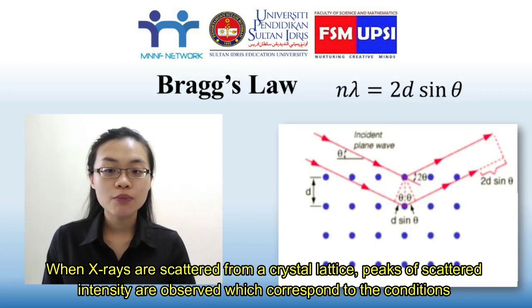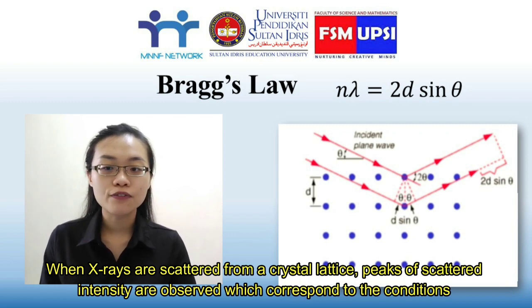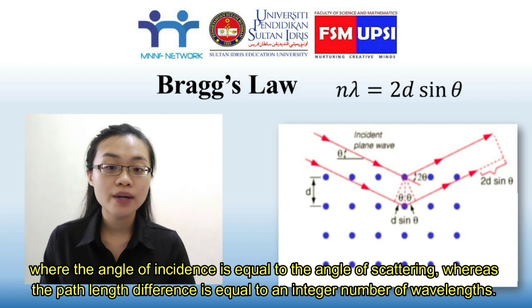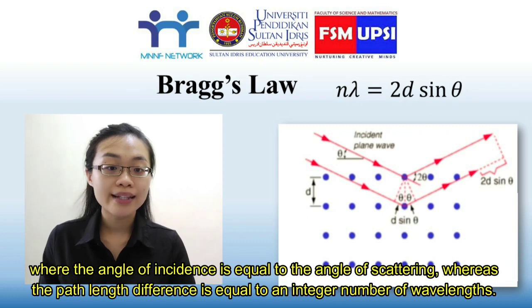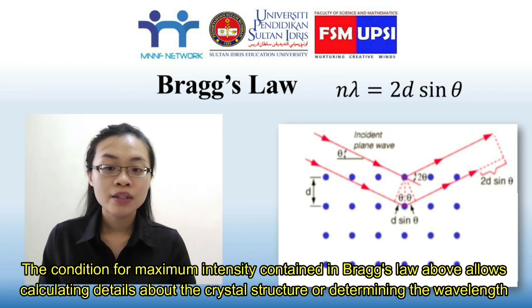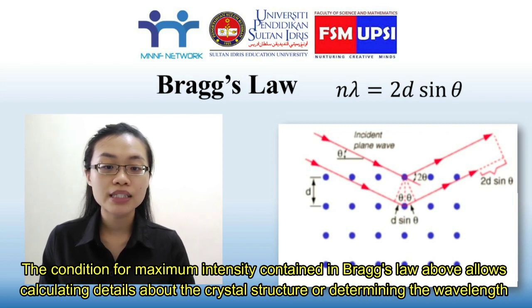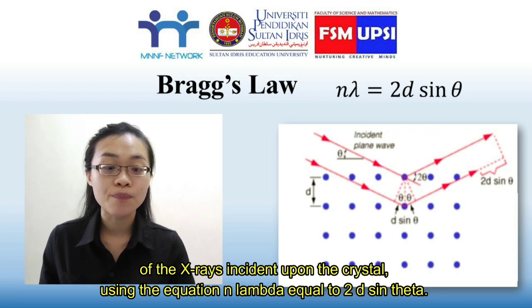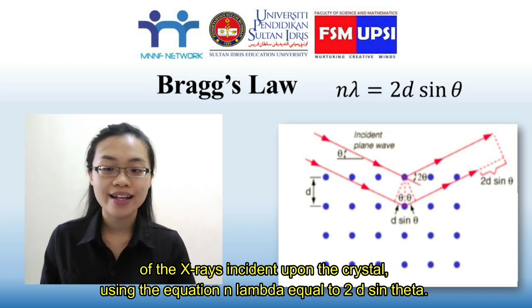When X-rays are scattered from a crystal like this, peaks of scattered intensity are observed which correspond to the conditions where the angle of incidence is equal to the angle of scattering, and the path length difference is equal to an integral number of wavelengths. The condition for maximum intensity contained in Bragg's law allows calculating details about the crystal structure or determining the wavelength of X-rays incident upon the crystal using the equation n lambda equals 2d sin theta.